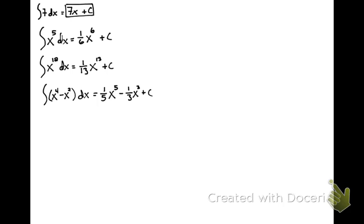Example 5: we've got the integral of t cubed plus t plus 1 dt. If we integrate each part of this, we'll end up with (1/4)t to the 4th plus (1/2)t squared plus t plus c. Any time we do an indefinite integral, we need to remember that constant of integration.